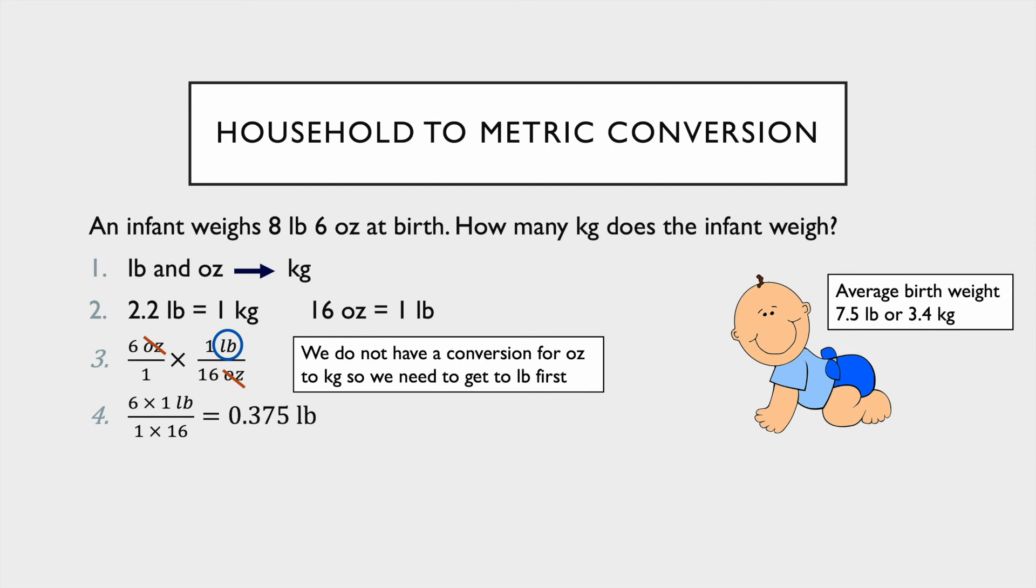Now we have our ounces to pounds so both of our units are in pounds so we can just add those together to get our total amount of pounds. Adding those together we get 8.375 pounds, and then we're going to use our conversion for kilograms to pounds.